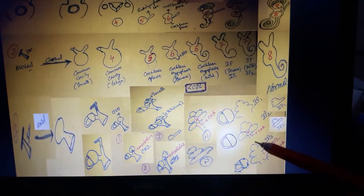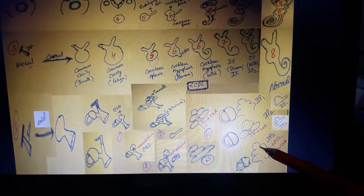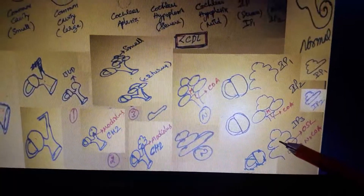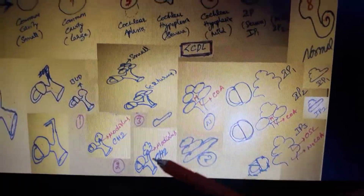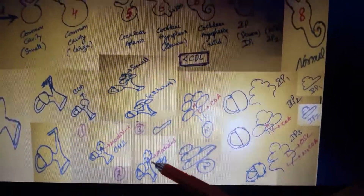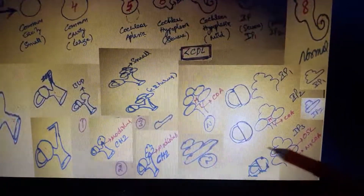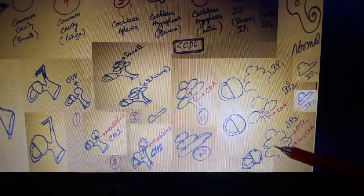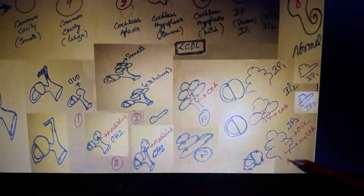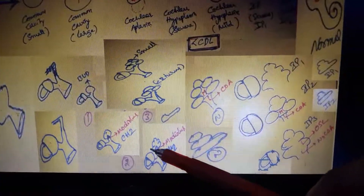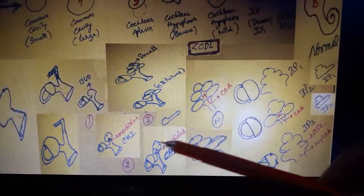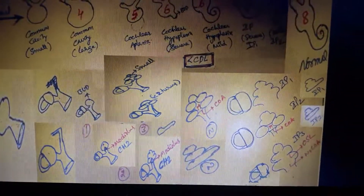One more point: the difference between CH2 and IP3 is that IP3 is normal size while CH2 is hypoplasia — the size is less. Additionally, in IP3 there is no modiolus and the cavity is directly connected to the internal auditory canal. Whereas in CH2, the modiolus is present. That is the key difference between CH2 and IP3.